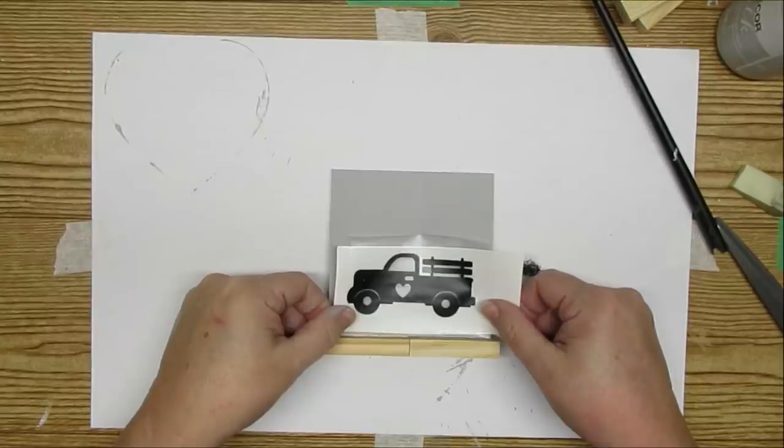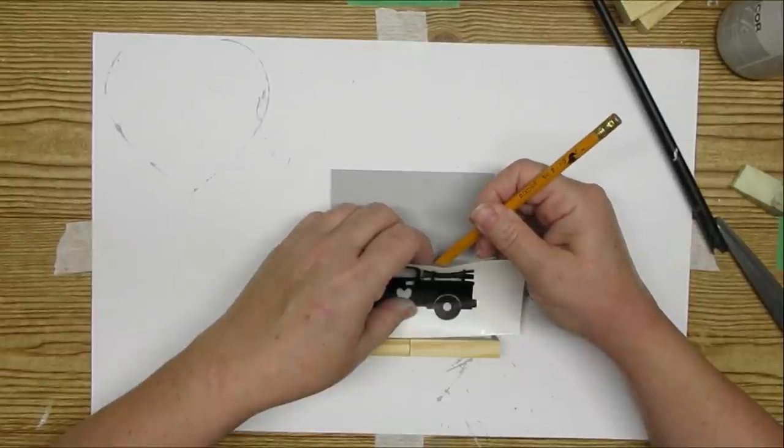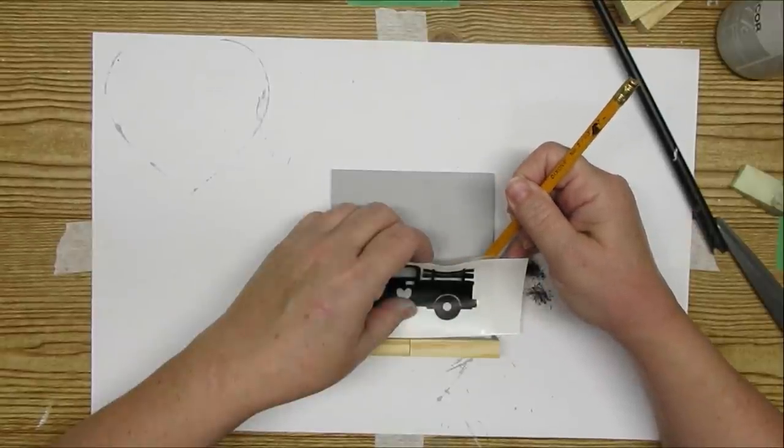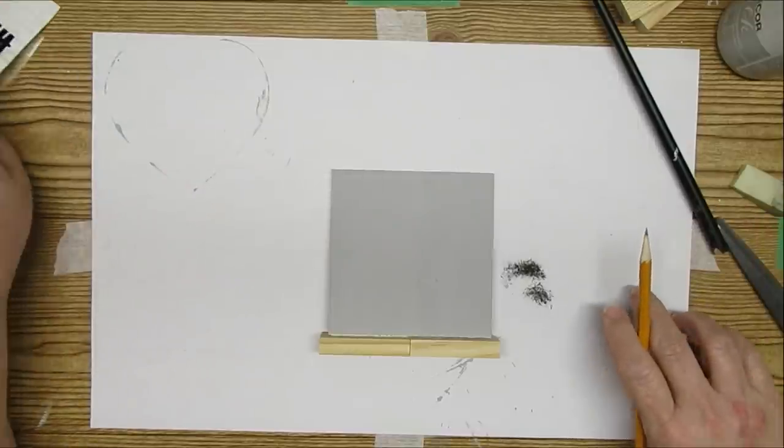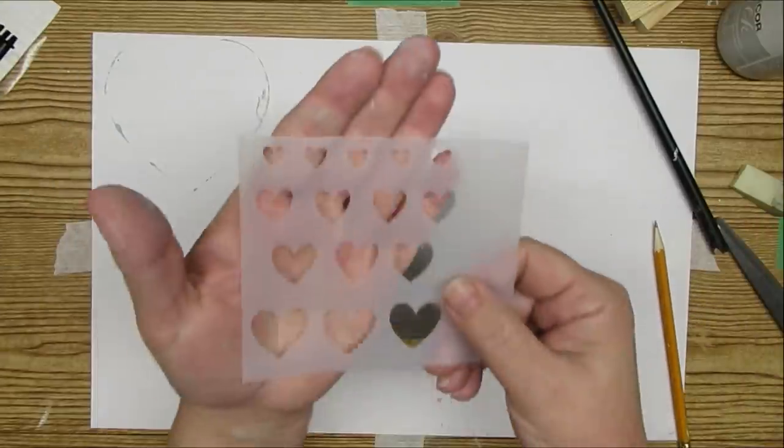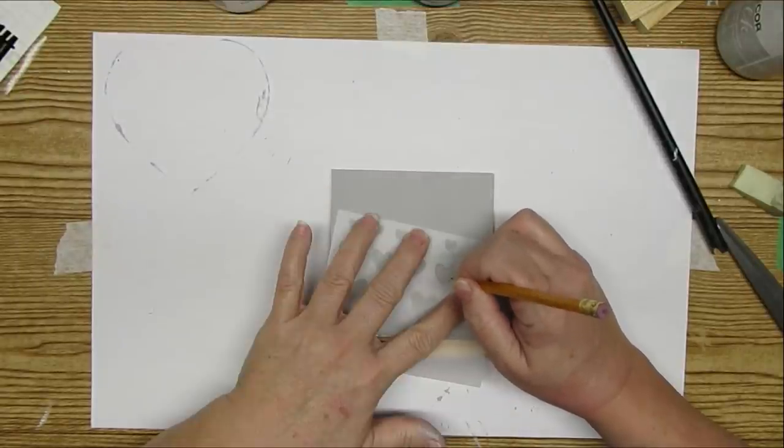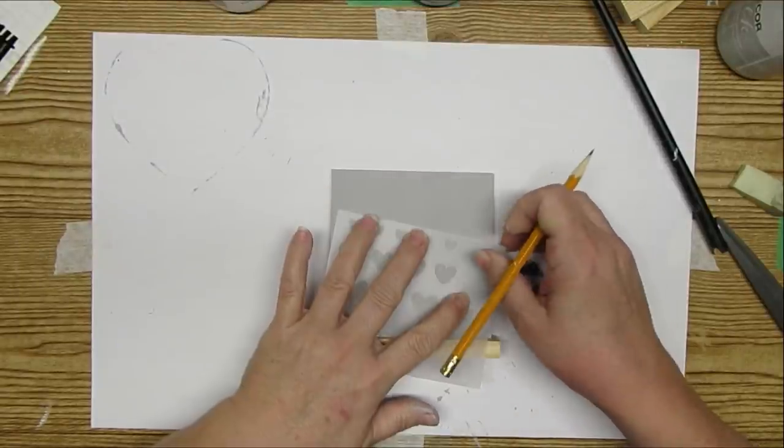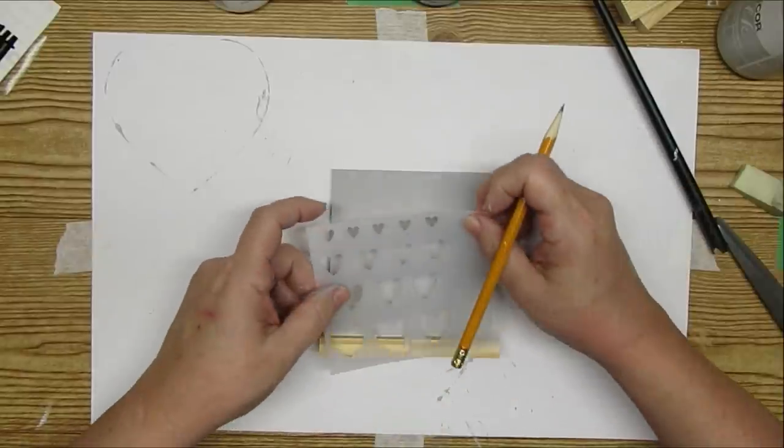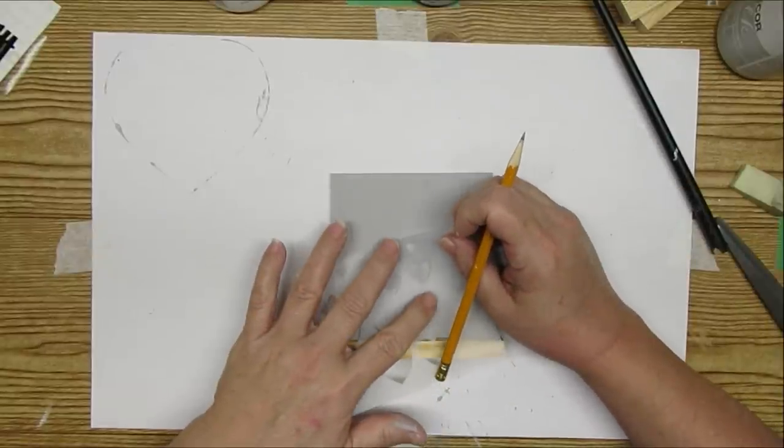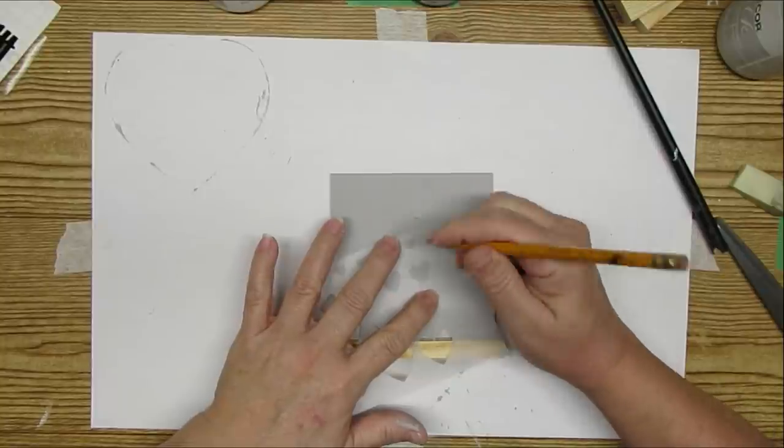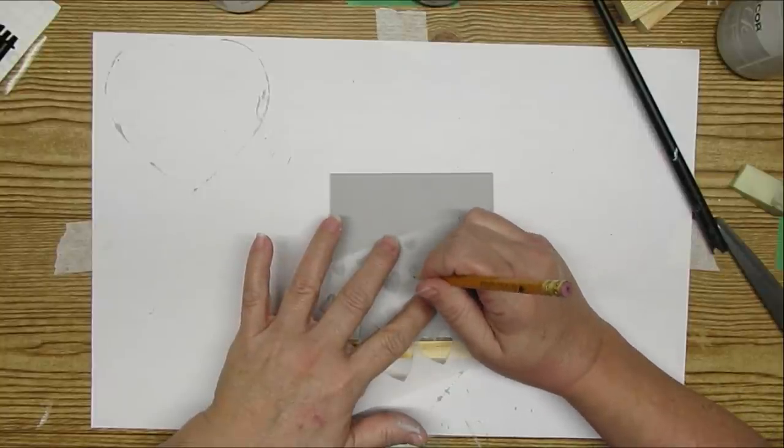With my Cricut Joy, I cut out a truck decal. I put a little heart on the door and now I'm just marking where the truck will sit. I want to use this heart stencil that I cut out with my Cricut Joy using some plastic poster board. I'm going to just use my pencil and create some hearts that will look like they're in the back of the truck and then a few of them floating on top of the truck.